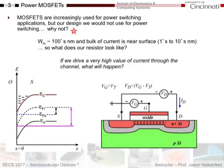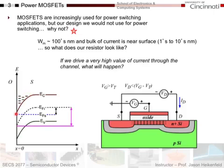MOSFETs are increasingly used for power switching applications, but with our current design we would not use this for power switching. If you look at how the device operates, I get inversion under the oxide, so almost all of my carriers are in a super-thin sheet right against the oxide surface — the concentration goes up exponentially with band bending. So if I get a ton of current flow through this thing, I'm going to get a ton of heat generated under this oxide because of this super-thin resistor, and it will basically blow the oxide right off. It's very easy to fry a MOSFET this way.